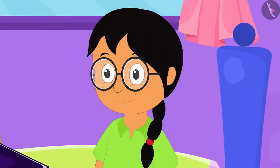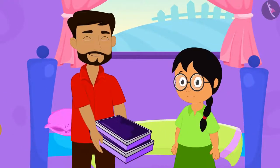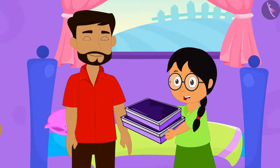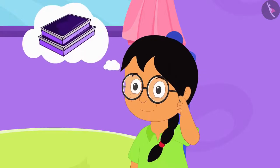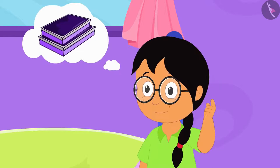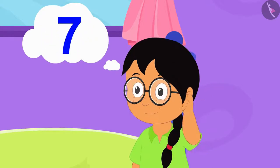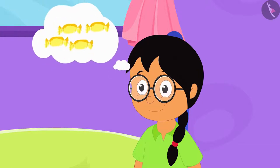Today, Meenu's uncle has come from abroad. He has brought various toffees for Meenu and her friends from abroad. Meenu is thinking that she will divide those toffees using groups of 3, 4, 5 or 7 in such a way that no toffee is left.